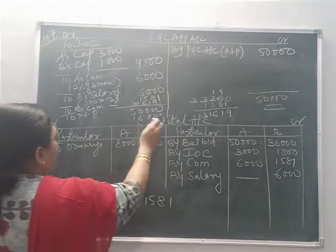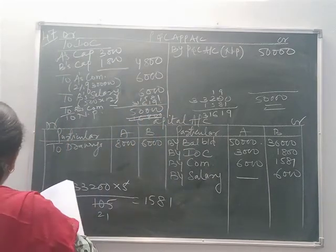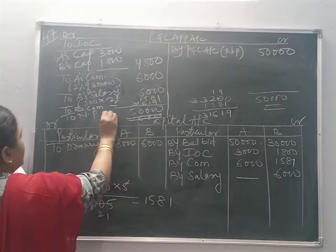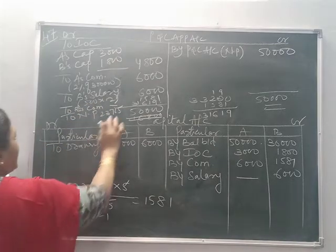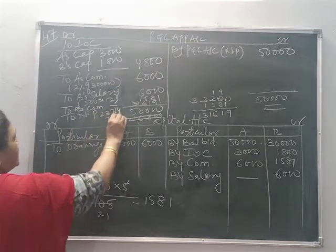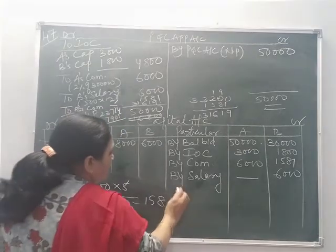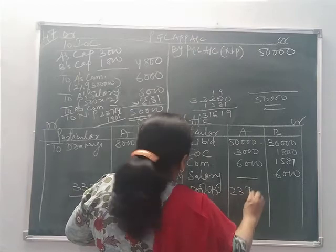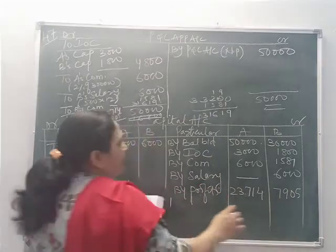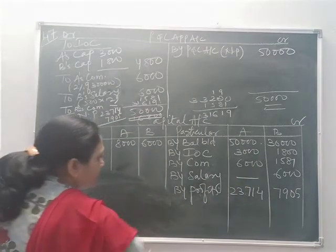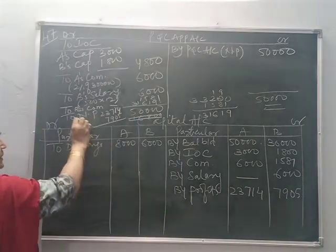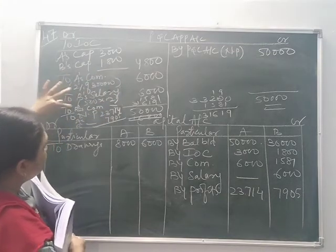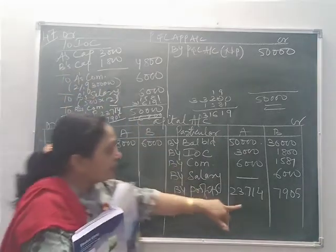The profit sharing ratio is 3:1 among the partners. The remaining divisible profit after subtracting B's commission of 1,581 will be divided — A gets 23,715 and B gets 7,905 approximately. By profits: A's capital 23,714 and B's capital 7,905. Profits are credited to both capital accounts. Make a note to also correct B's commission entry and the net profit division.